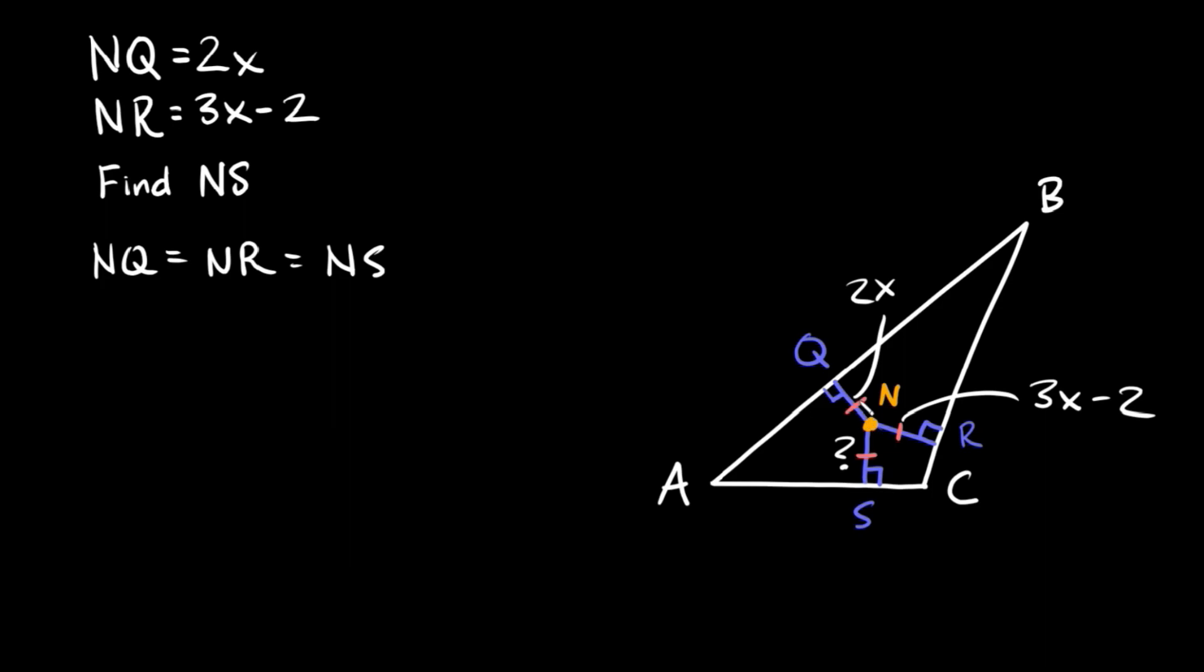So knowing that we can set these two lengths that we know or we have equations for them. So we have 2x and 3x minus 2. We can set those equal to each other because we know they're equal to each other. So here we could just say that 2x is equal to 3x minus 2.